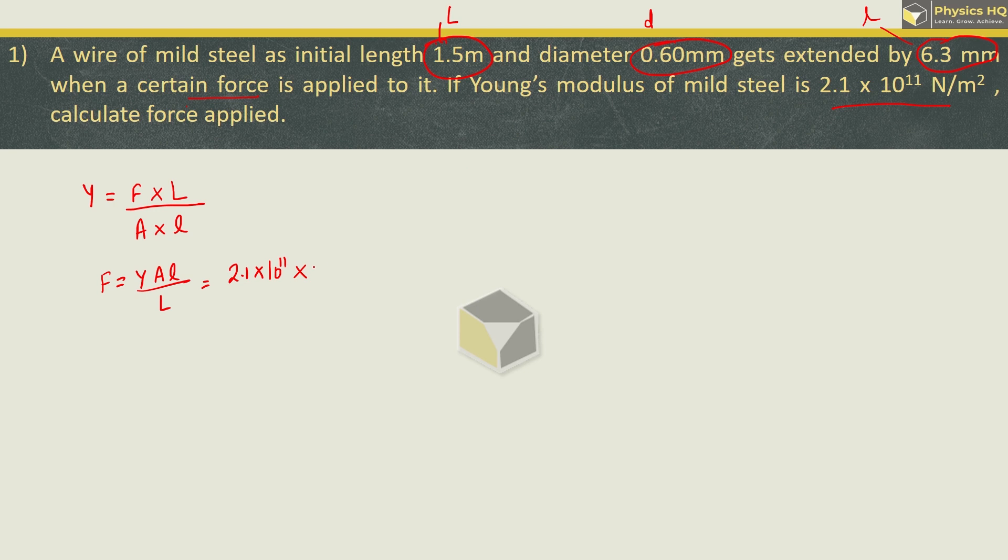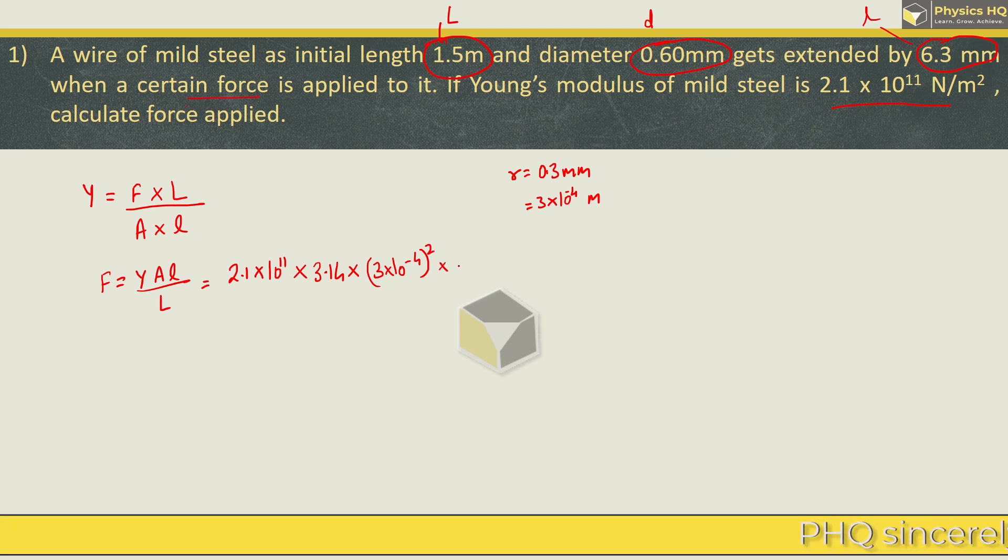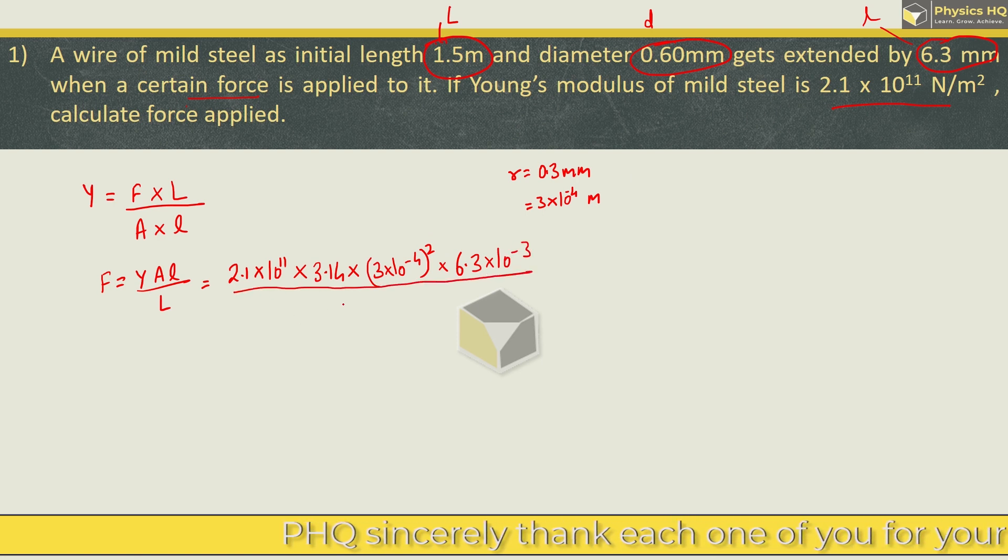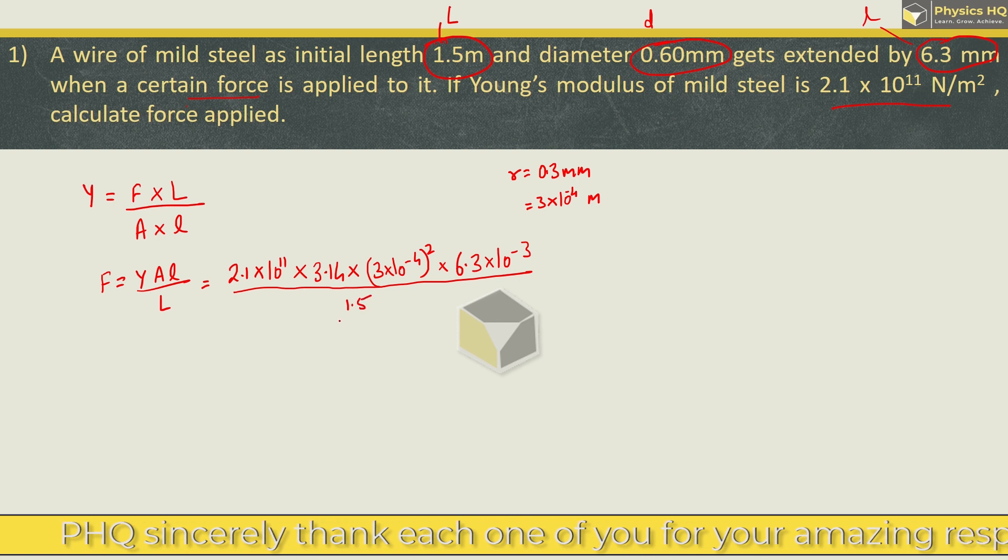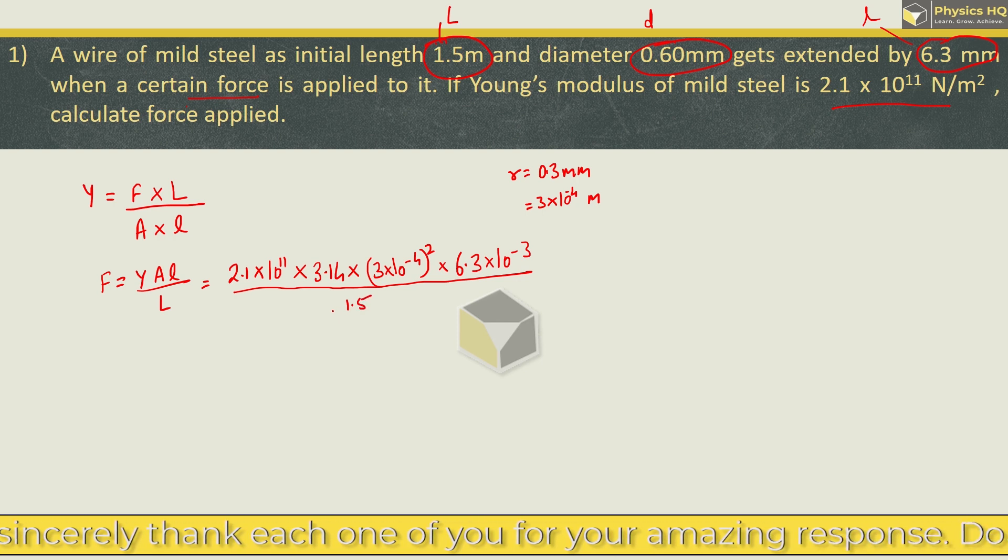Area is πr². So 3.14 is pi. Radius will be half of the diameter, so radius is 0.3 mm, which is 3 × 10^-4 meter. So πr², you've got radius squared. Small l is extension which is 6.3 mm, so this is 6.3 × 10^-3, divided by the actual length which is 1.5.